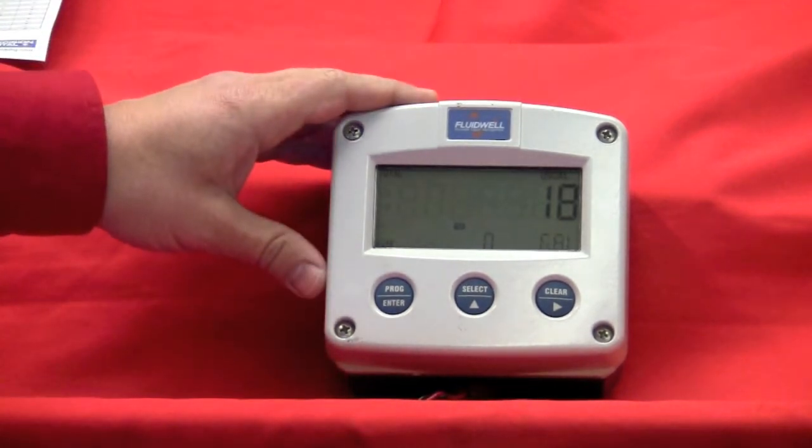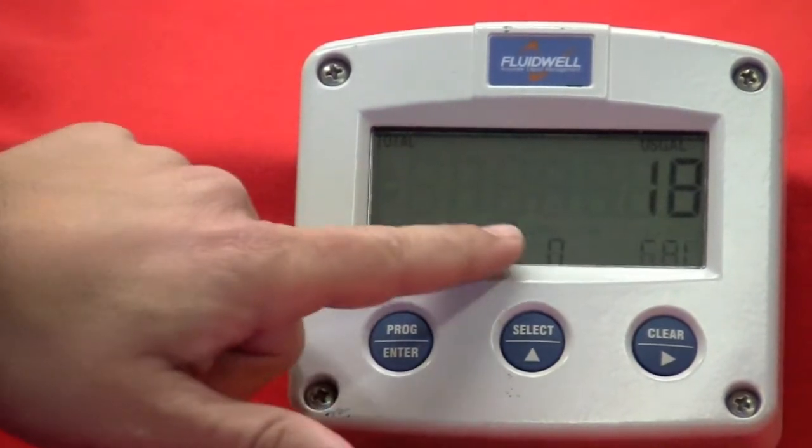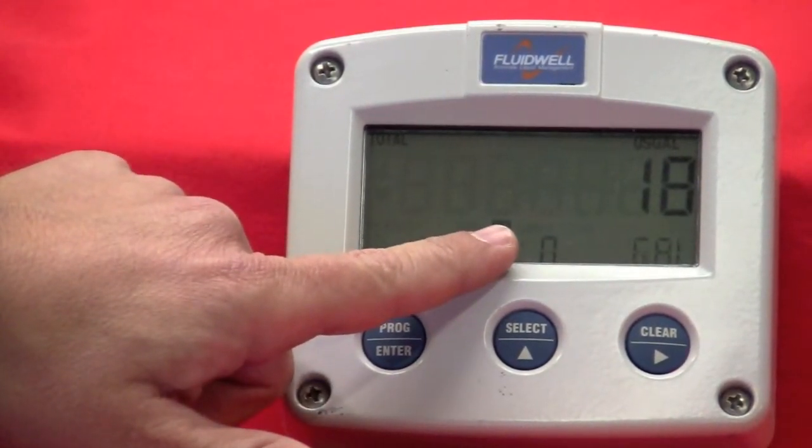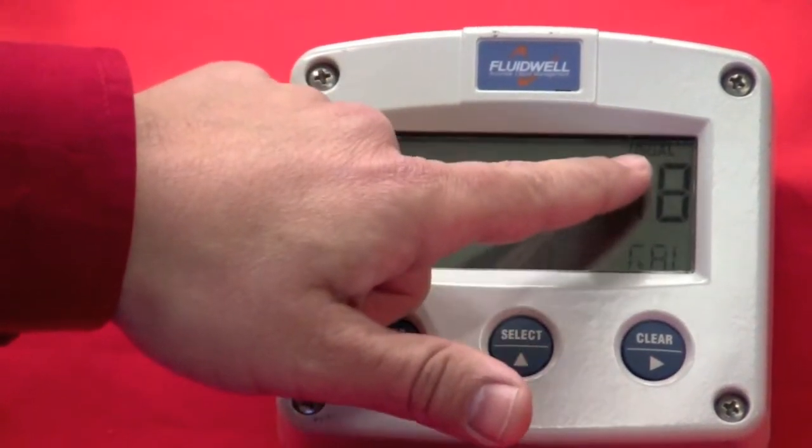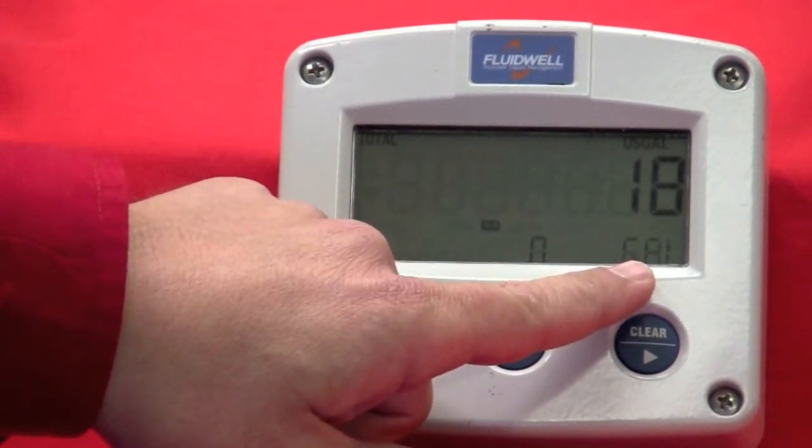This is your typical operating screen here. We're going to cover the LCD and what it's telling you. Right now it's indicating we're in the run mode. This is your total in U.S. gallons, and then we also have flow rate indication here in gallons per second.